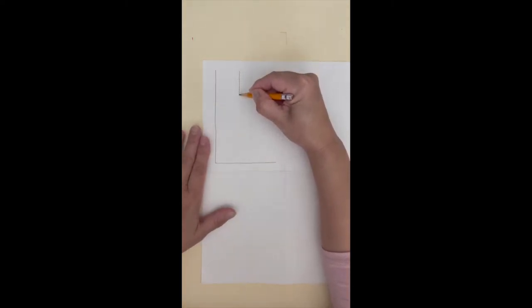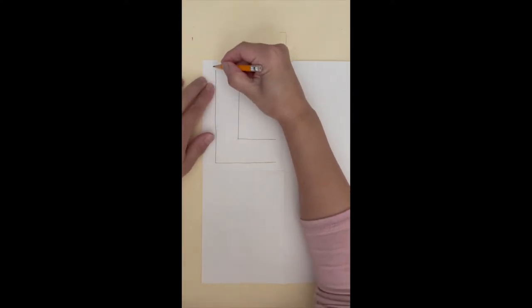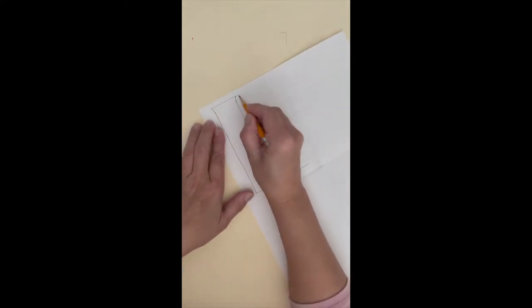Leave about a two finger space and draw a smaller L. Let's make our letters fancy by curving the lines out before connecting them together.